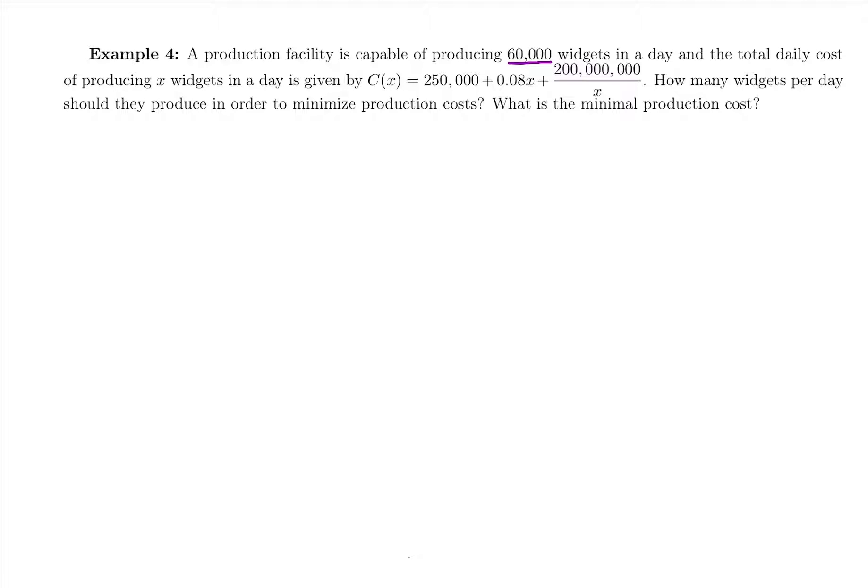Their total daily cost of producing x widgets in a day is given by C(x). There is our objective function, what we're going to try to find any critical numbers for and absolutely minimize, in this case, because we're talking about cost. So we're going to do our two steps: find any critical numbers and then test them on our interval of interest.